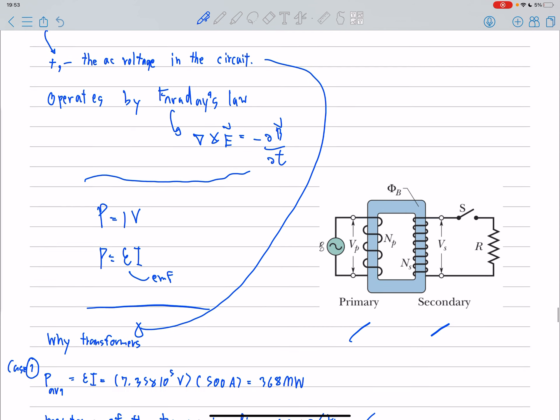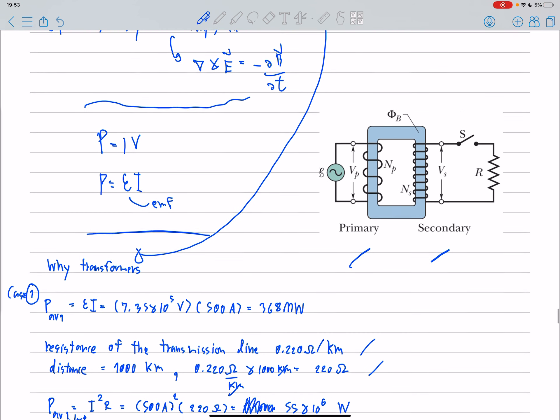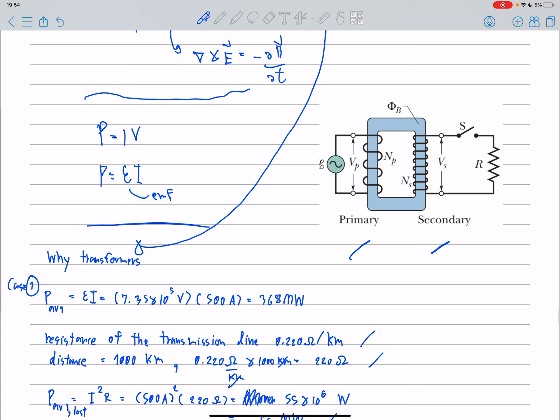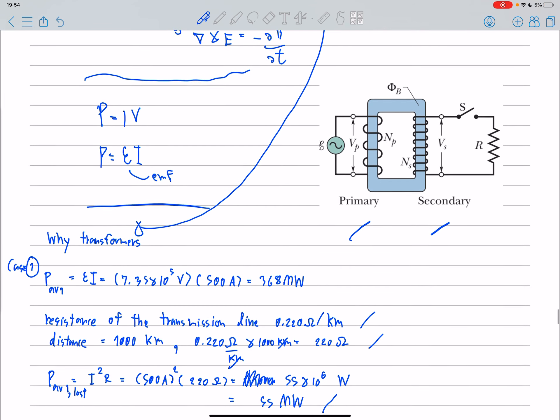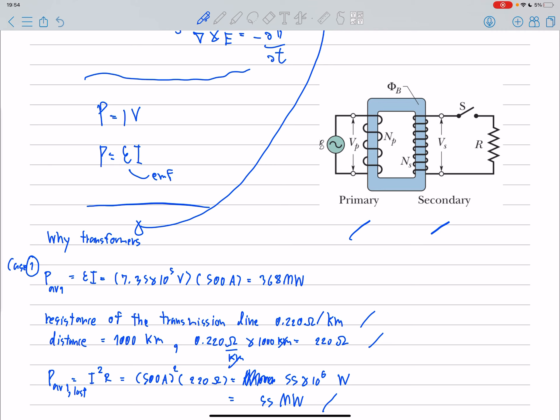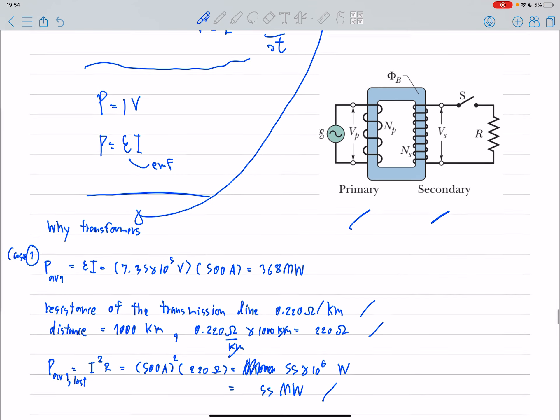Why transformers? Because in everyday life, we need a low voltage because it's not safe to use electric devices in high voltage. But for the transportation of electricity, we need a high voltage because if we calculate the losses, if we use high voltage, we will decrease the losses of electricity.